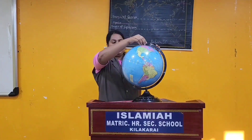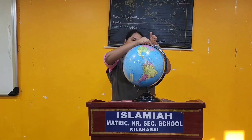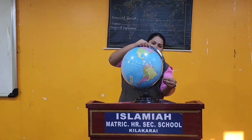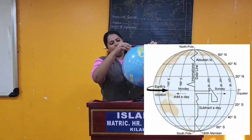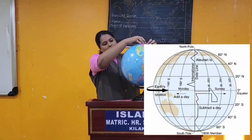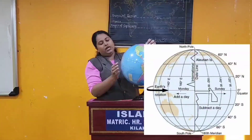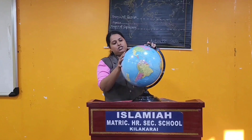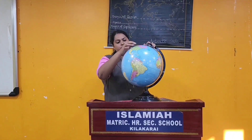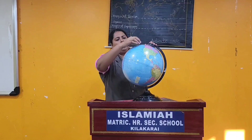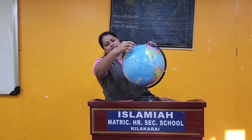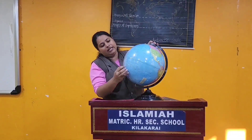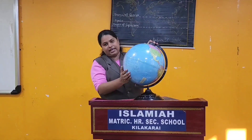Next, opposite to the zero degree prime meridian, you have your International Date Line. The prime meridian or the longitude is used to determine timing. The International Date Line is in a zigzag manner. If you see the globe, you can find the International Date Line.